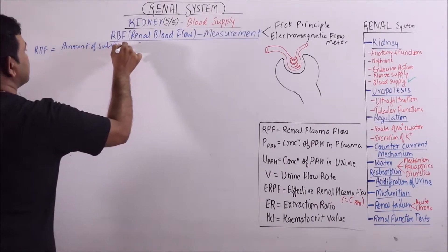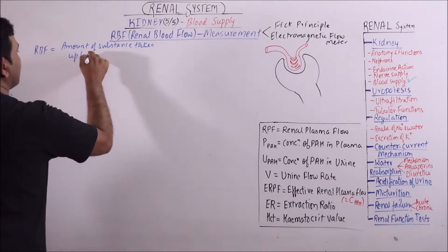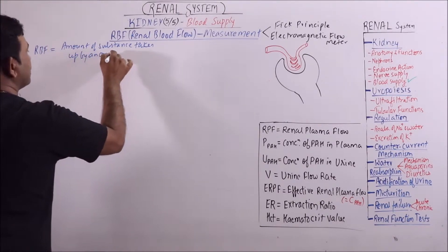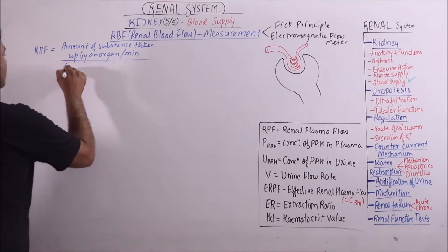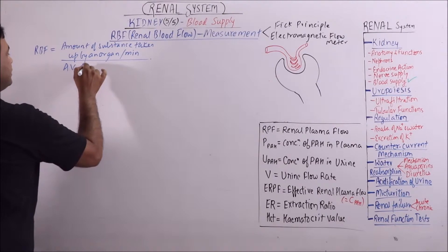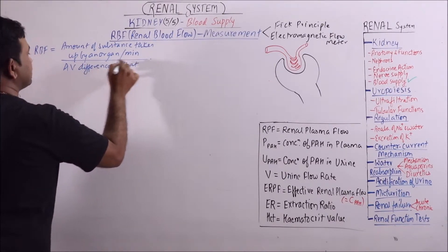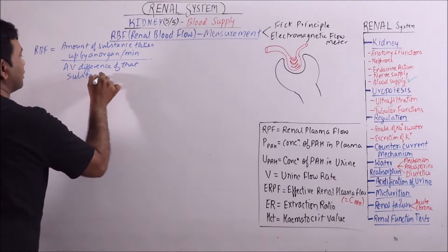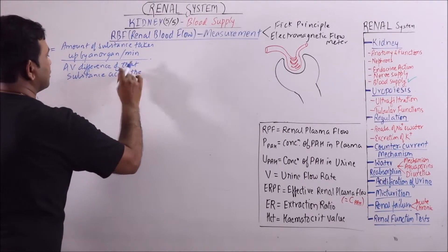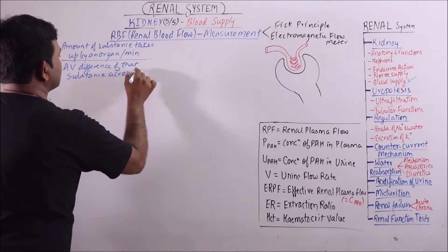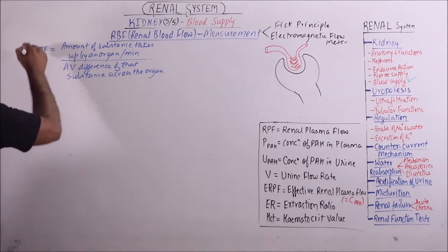of substance taken up by an organ per minute divided by the arteriovenous difference of that substance across the organ. This will give the value of RBF.